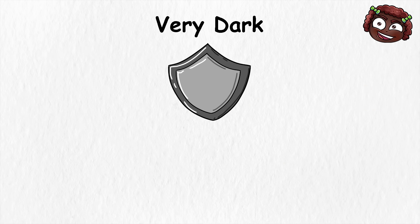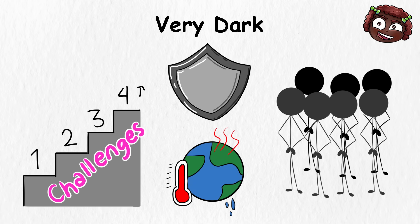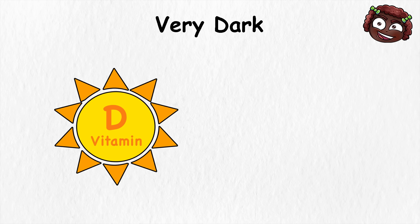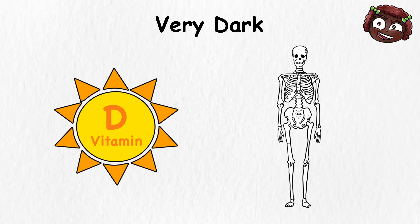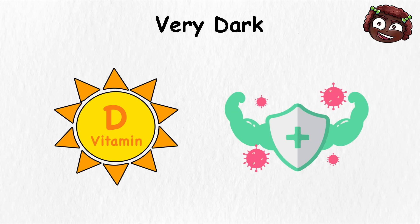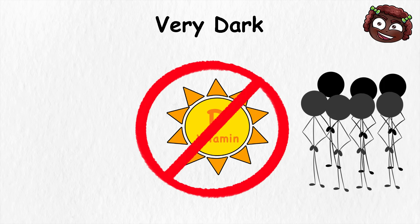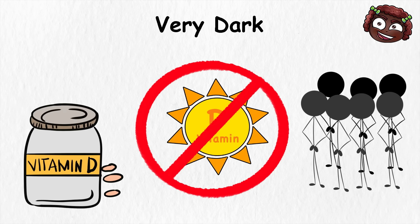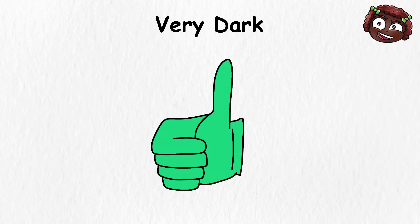But the same protection creates challenges in other climates. When groups with very dark skin moved north into regions with weak sunlight, vitamin D became harder to produce. Without enough of it, bones and immune systems suffer. That's why today, vitamin D deficiency is more common in darker-skinned communities living far from the equator. Food, supplements, or long hours outdoors often have to make up the difference.